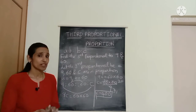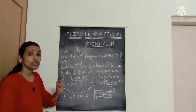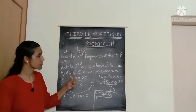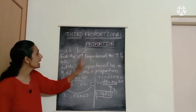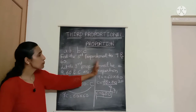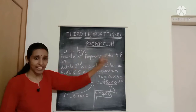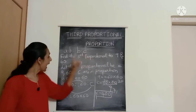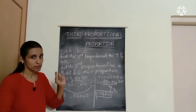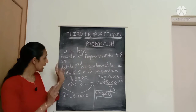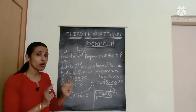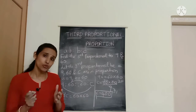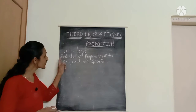One important thing to note: you should not change the order in which the numbers are given. If you are asked to find the third proportional to 9 and 60, take 9 as the first term and 60 as the second term. If you change the order, the answer will be different.